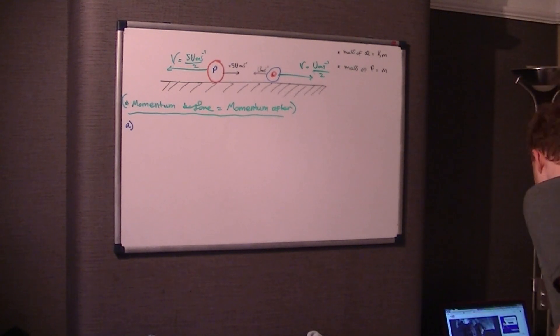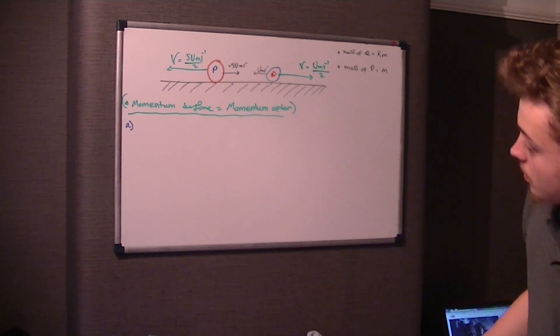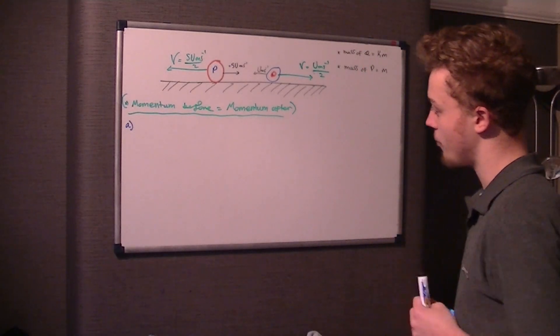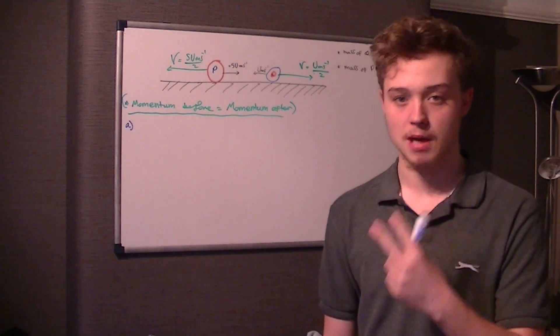The first question asks us to find the value of K. This key thing here is what's going to enable us to answer this question. The momentum before equals the momentum after. Momentum is mass times velocity.